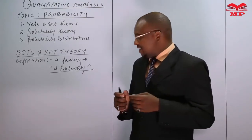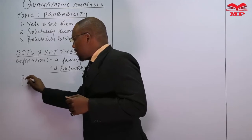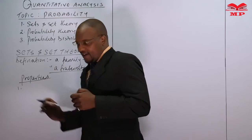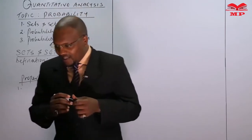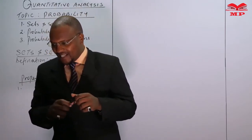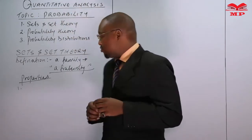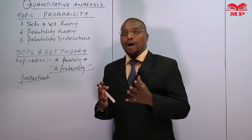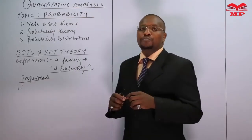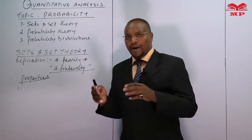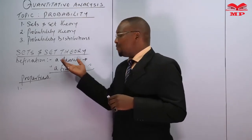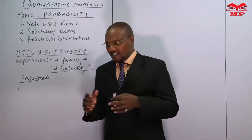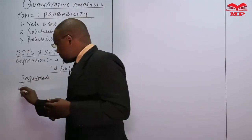Now, having known what a set is, let's look at the properties of a set. Number one: the elements of a set are well defined. Like in a family, we must define who the members are. Should you bring another person who is not a member of the family, then it ceases to be that family — and therefore the elements of a set must be well defined.